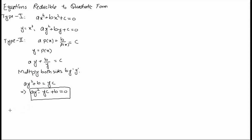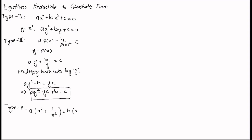The third type of equation that can be reduced to a quadratic equation are of the form a(x² + 1/x²) + b(x + 1/x) + c = 0. Here we take y = x + 1/x.